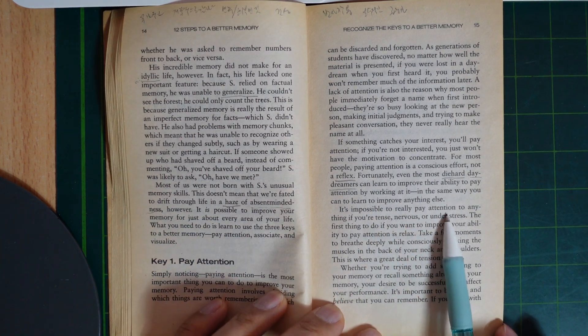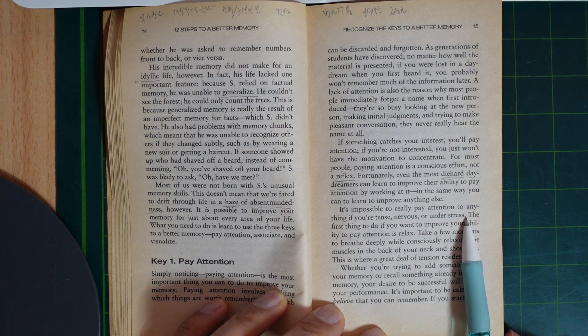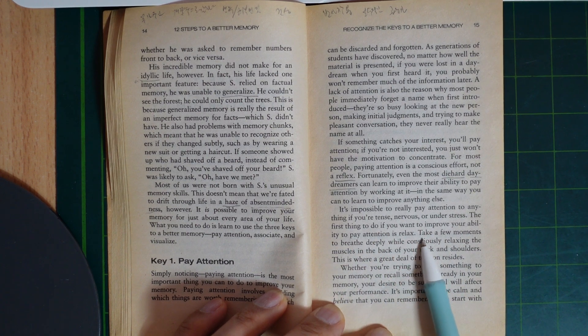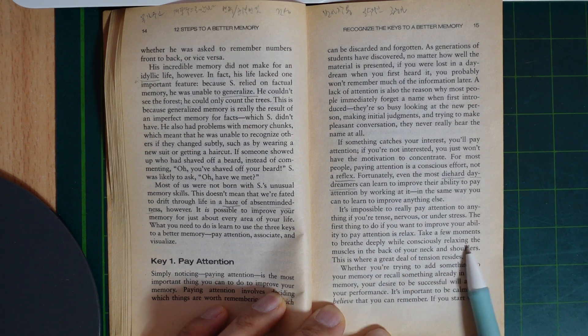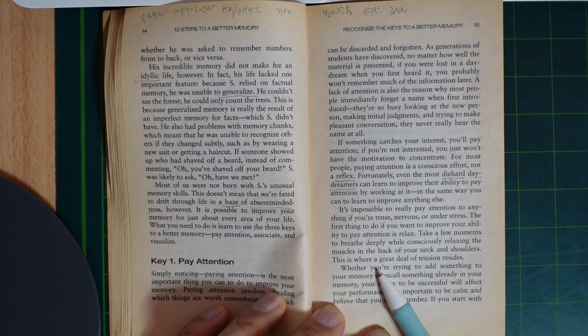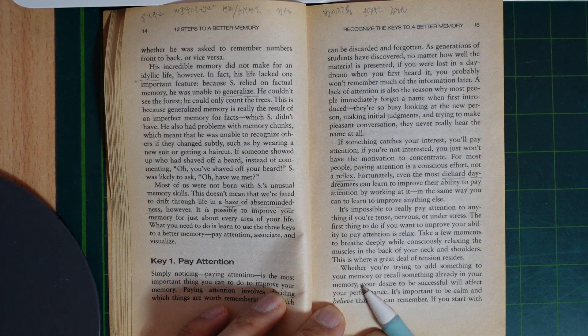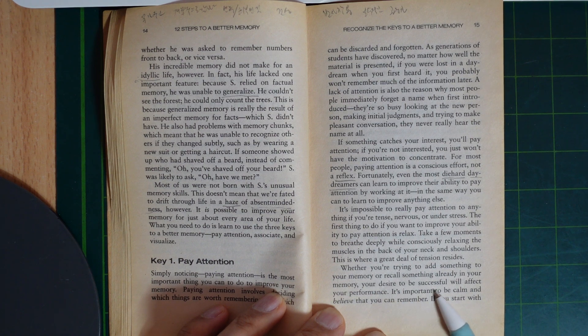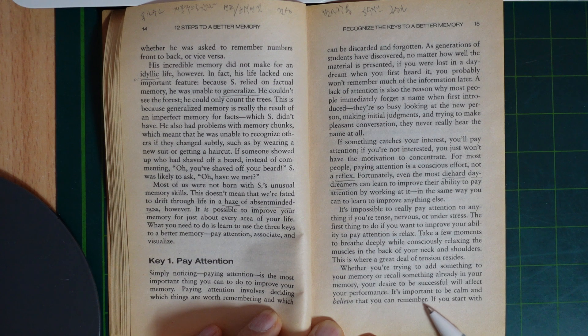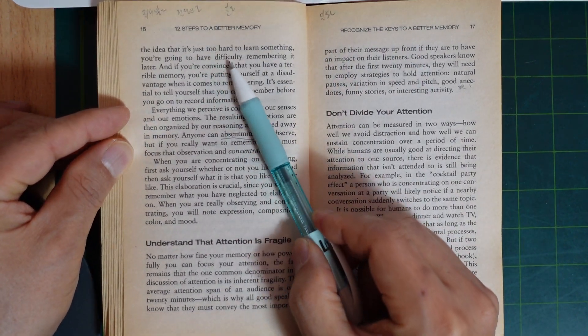It is impossible to really pay attention to anything if you are tense, nervous, or under stress. The first thing to do if you want to improve your ability to pay attention is relax. Take a few moments to breathe deeply and consciously relax the muscles in the back of your neck and shoulders, as this is where a great deal of tension resides. Whether you are trying to add something to your memory or recall something already in your memory, your desire to be successful will affect your performance. It is important to be calm and believe that you can remember.